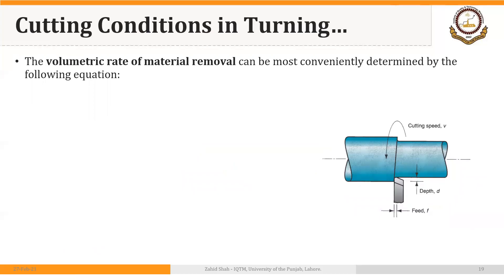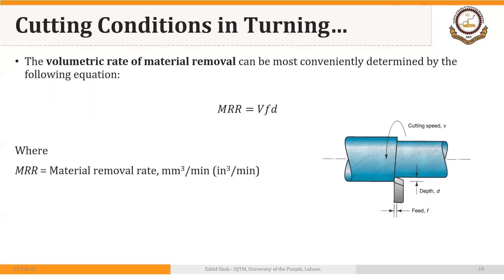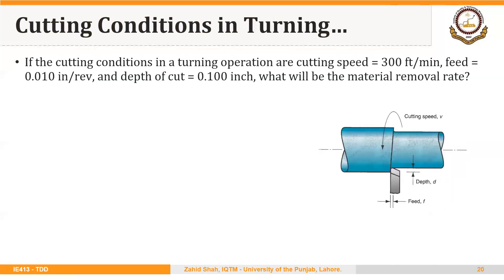Finally, the volumetric material removal rate equals cutting speed multiplied by feed multiplied by depth of cut, giving the rate in inches cubed per minute. For example, if the cutting speed is 300 feet per minute, feed is 0.010 inches per revolution, and depth of cut is 0.100 inches, what is the material removal rate?